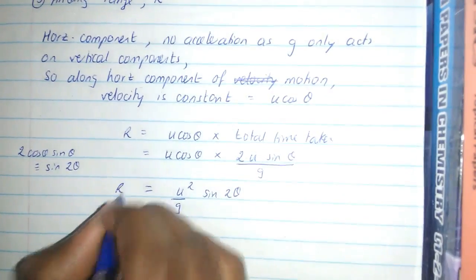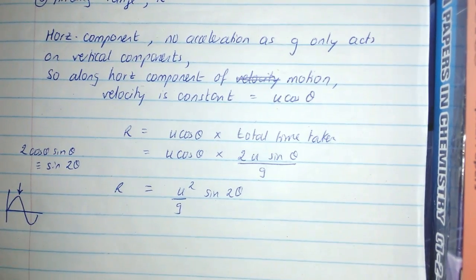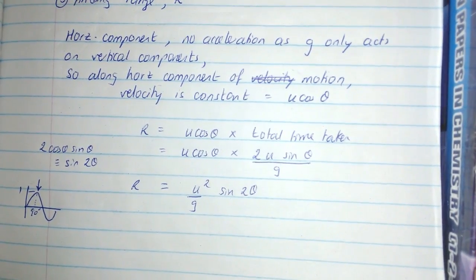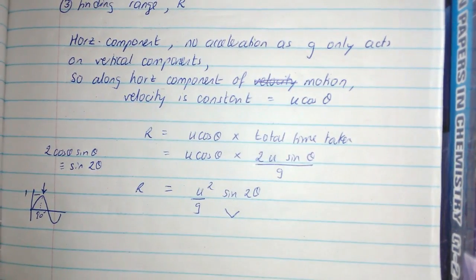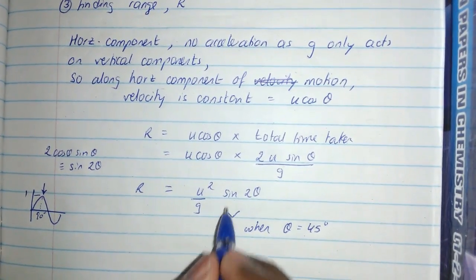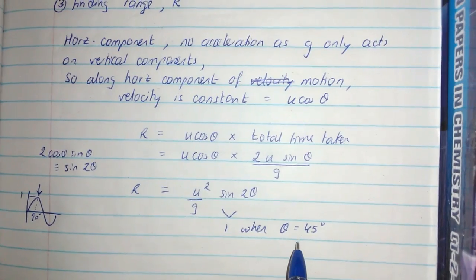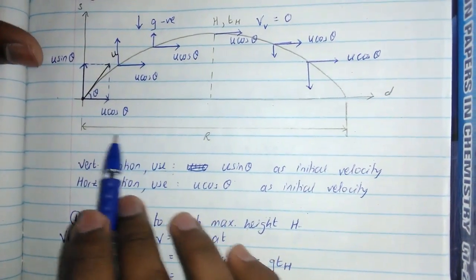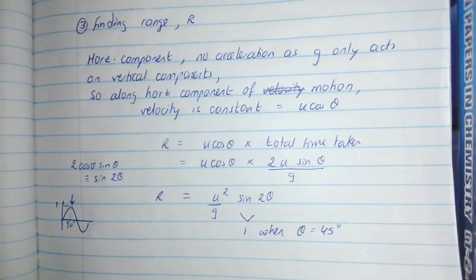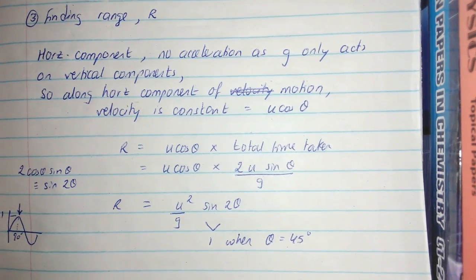As an extension, from the sine curve we know that sine has a maximum value of 1 when the angle is 90°. So sin2θ is at its maximum when 2θ = 90°, that is when θ = 45°. At 45°, sin(2 × 45°) = sin90° = 1, which is its maximum. This means the range is greatest when the launch angle is 45°, which is exactly why athletes throwing the javelin are coached to throw at 45 degrees.